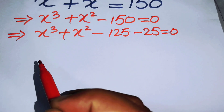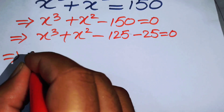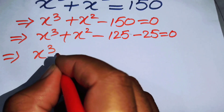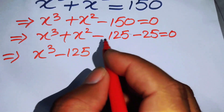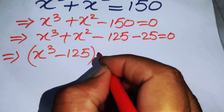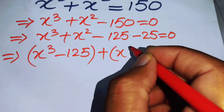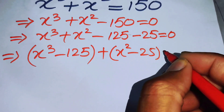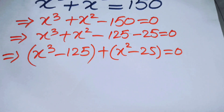Grouping the terms, it will be written as (x cubed minus 125) plus (x squared minus 25) is equal to 0.